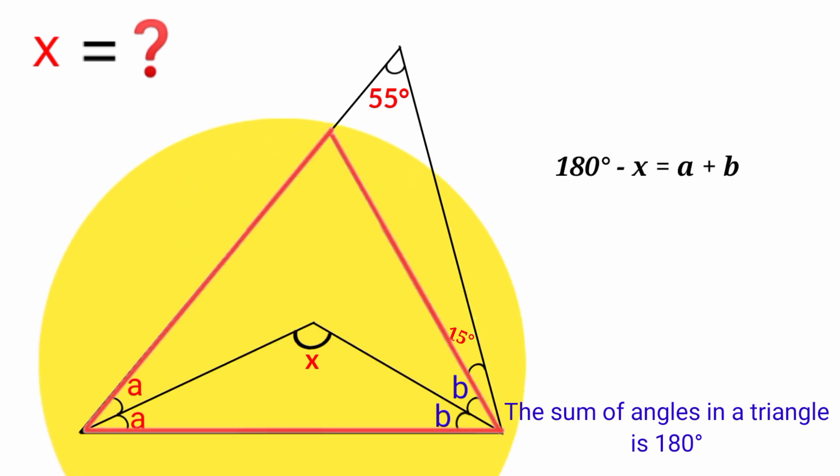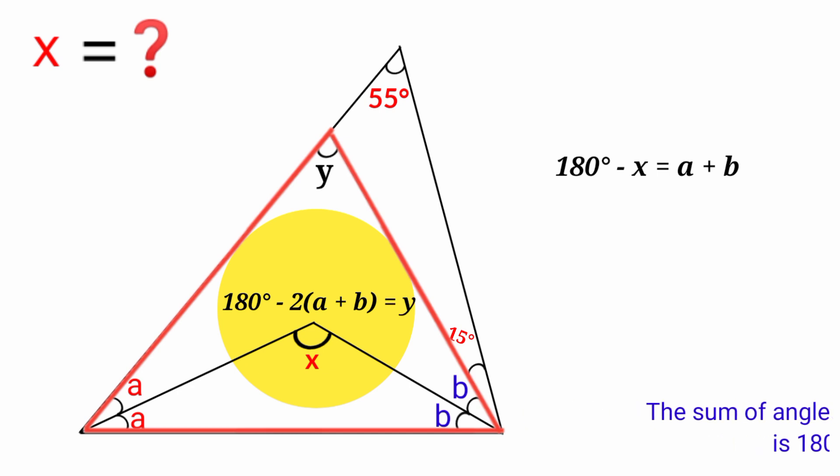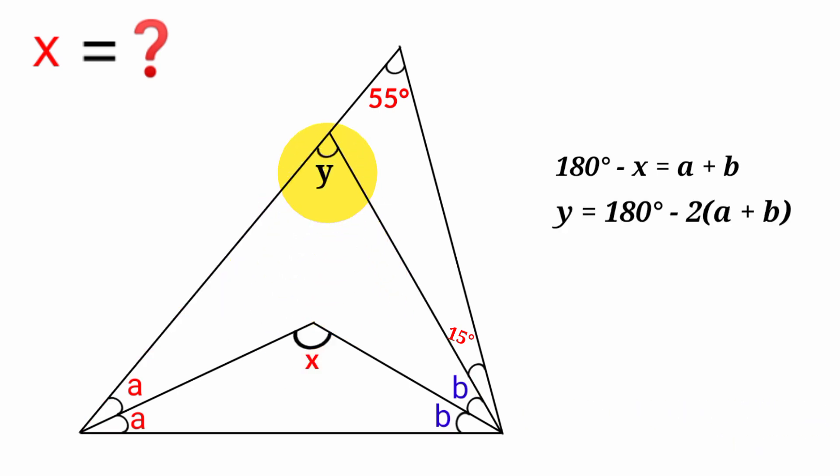Now take a look at this triangle here. Let's say this angle here is y. So the sum of this y, these two a's, and these b's here must be equal to 180 degrees. That is, if you subtract a and b twice from 180 degrees, we're going to have angle y.